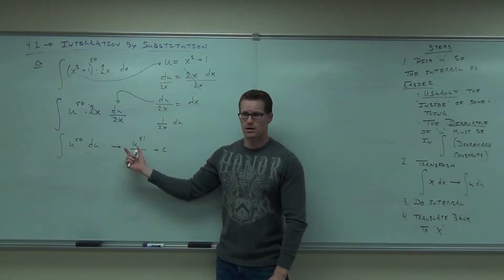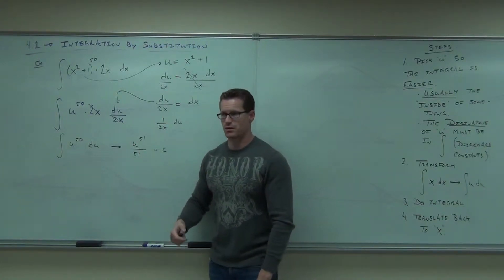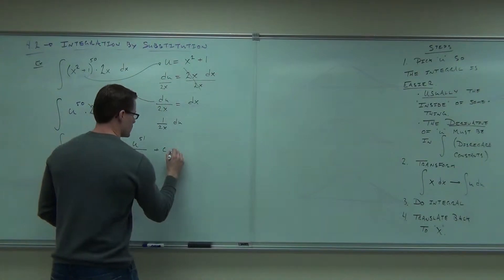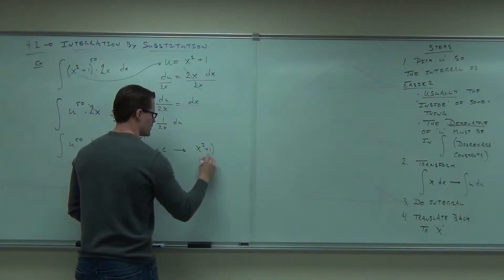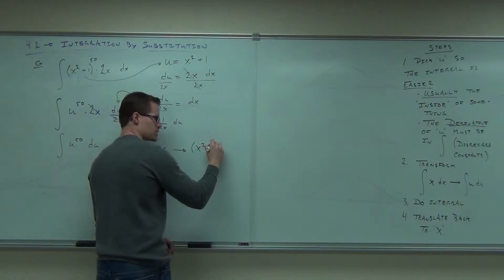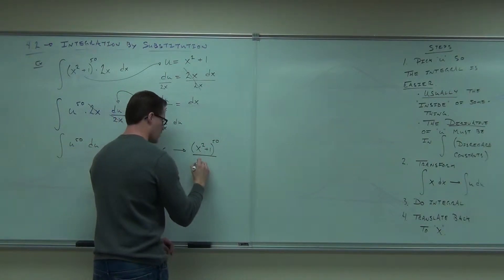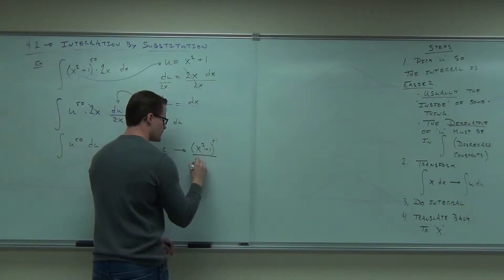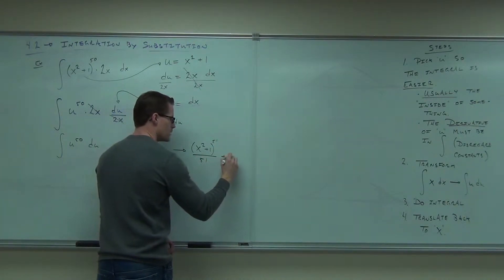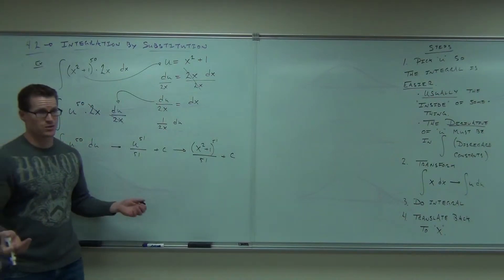It's on the paper, right? Let's put x squared plus 1 back there. x squared plus 1 in parentheses to the 50th power. 51st power. 51st. 51st power over 51 plus c. That's your answer.